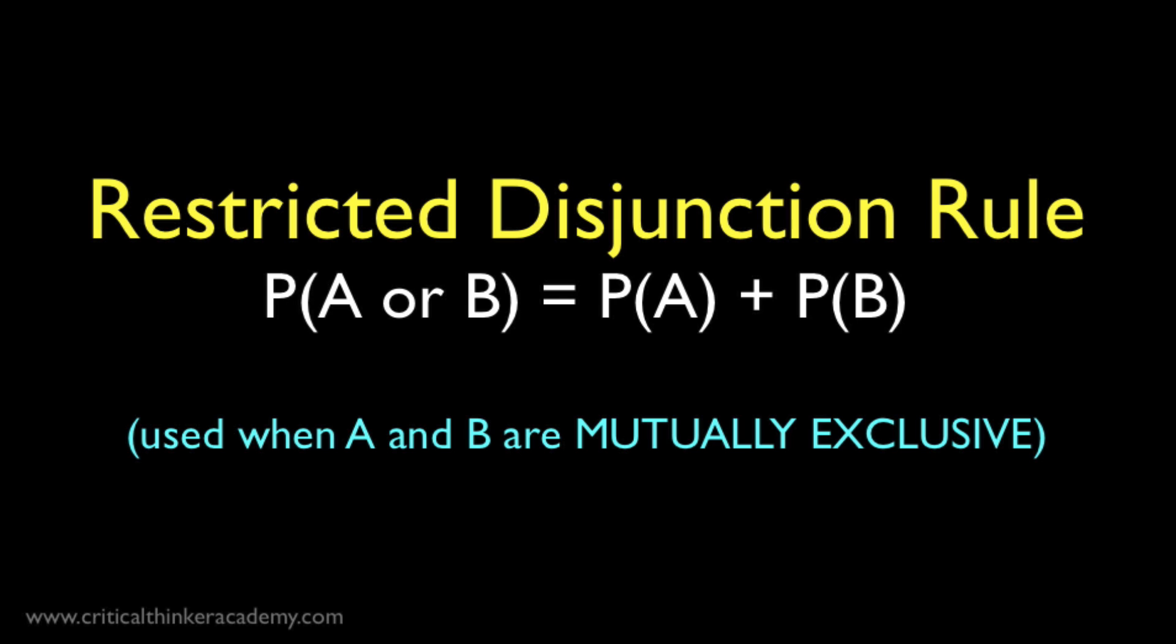In this video, we'll look at the disjunction rule, the rule for calculating the probability of a disjunction of events. Or in more familiar terms, given probabilities for events A and B, what is the probability that either A or B will occur?